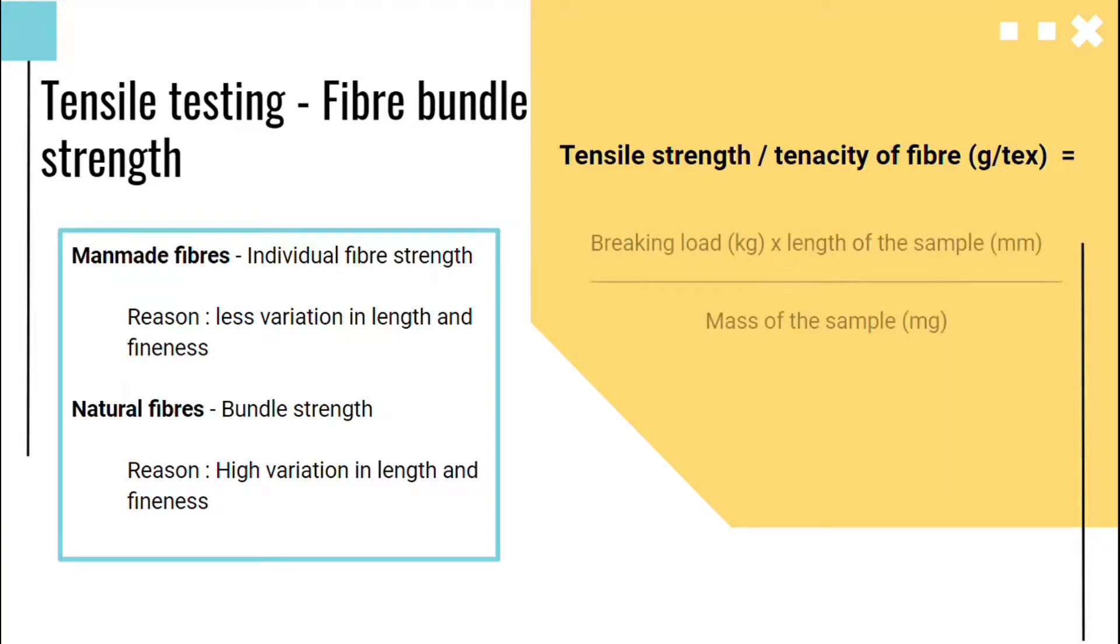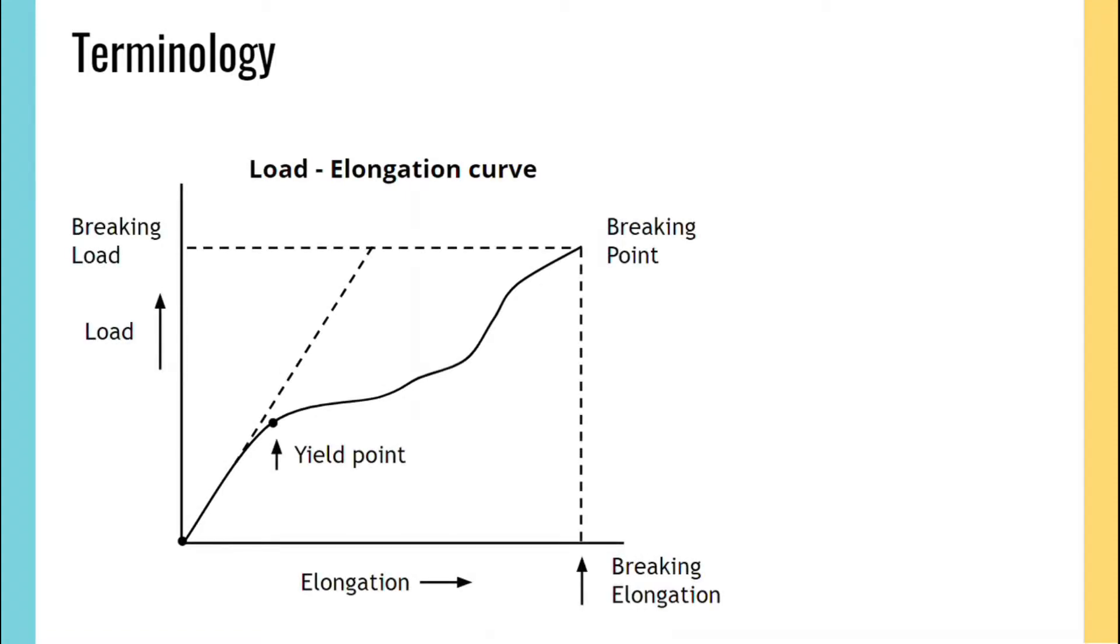Tensile strength or tenacity of fiber can be found by breaking load in kilograms multiplied by length of the sample in millimeters upon mass of the sample in milligrams. The load-elongation curve of a fiber is also known as the stress-strain curve.